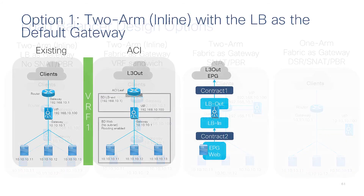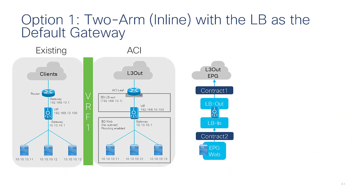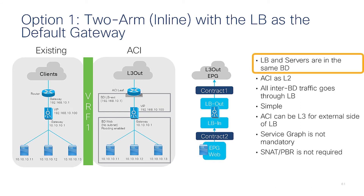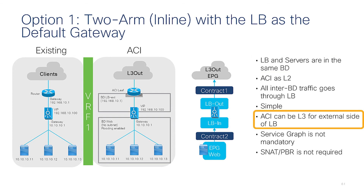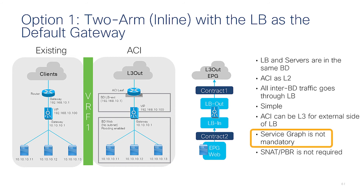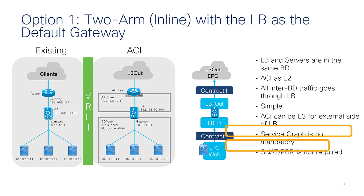In two-arm mode where the load balancer is the default gateway, you create two BDs. The load balancer will be the default gateway on the web BD, and the load balancer and servers are in the same bridge domain. ACI can be the layer three routing device on the outside BD for the load balancer. No service graph, no source NAT, and no PBR is needed.